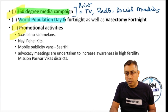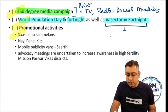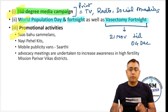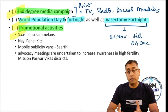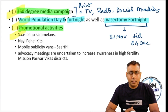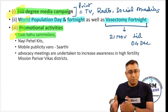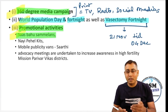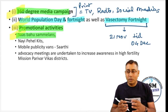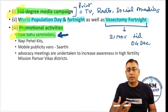World Population Day is on 11th July, with a fortnight alongside it. The vasectomy fortnight is from 21st November till 4th December. Please remember some of the IEC activities — this is particularly important for UG students preparing for prof exams or MDPSM students. The promotional campaign is Saas Bahu Sammelan — Saas is mother-in-law, Bahu is daughter-in-law. They want them to interact so they know about demands and expectations from a family, and come to a common platform to talk.